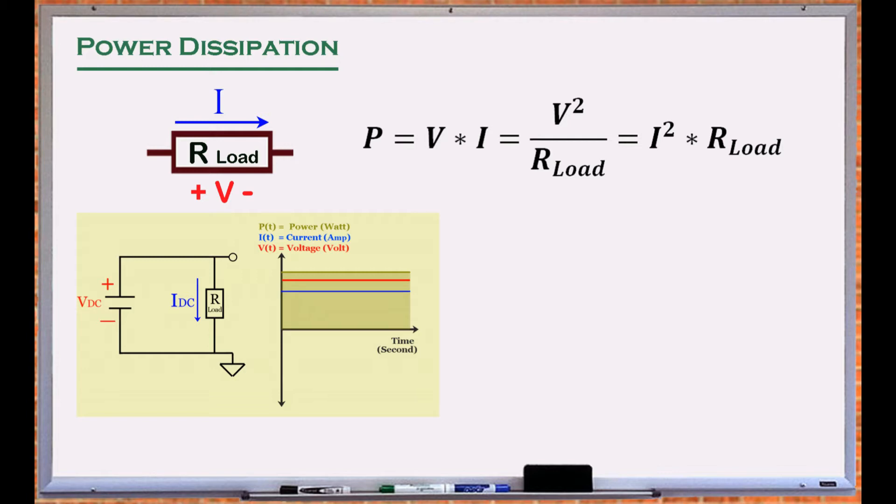For a DC circuit, the voltage and current are independent of frequency and so is the magnitude of the power. For DC circuits, the power is constant.